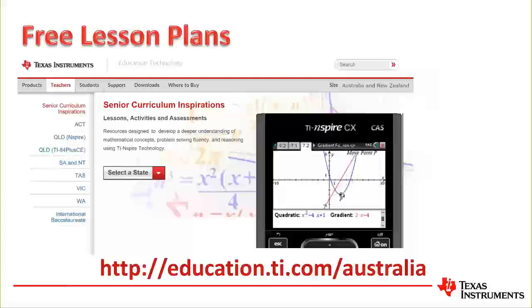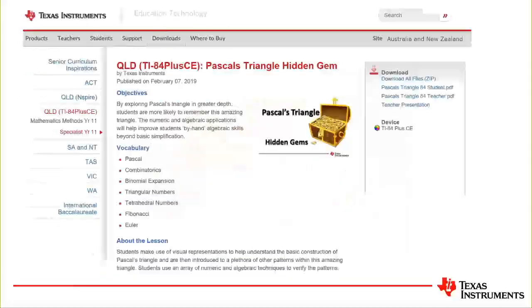Once on the website, click on the Teachers tab, go to Senior Curriculum Inspirations and then select the state and course of your desire. For today's activity, I've selected the activity from the Queensland Year 11 Specialist Mathematics course using the TI-84 plus CE platform. You can see on the right where the download can be done.